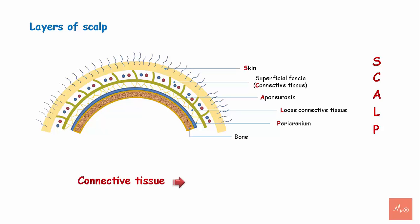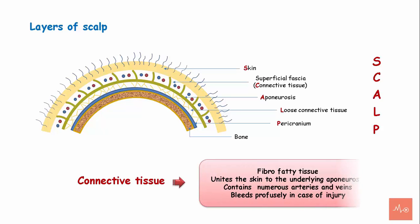The connective tissue is also called fibrophytic tissue, and it unites the skin to the underlying aponeurosis. This layer contains numerous arteries and veins and hence bleeds profusely in case of an injury.